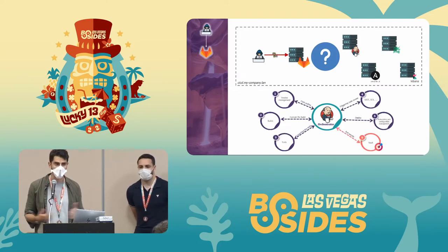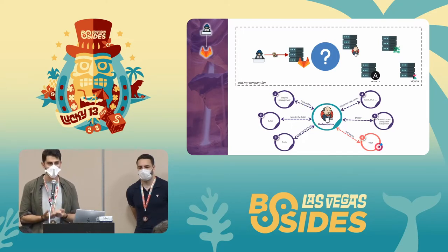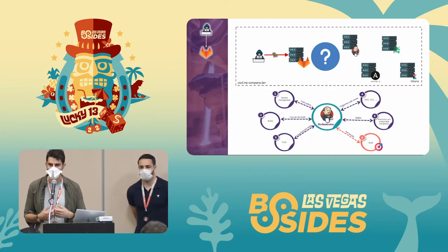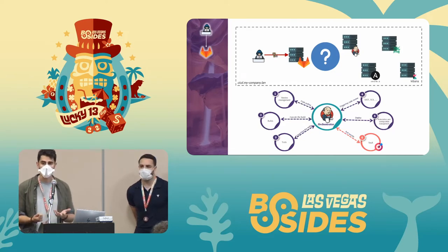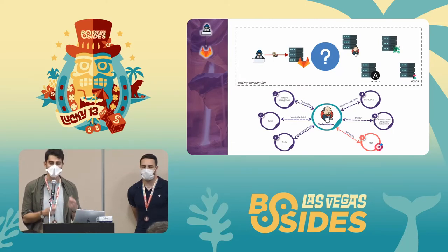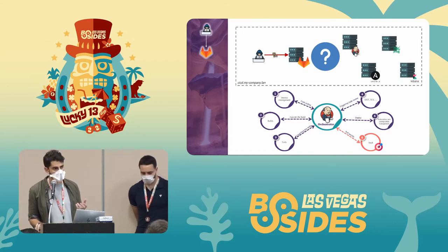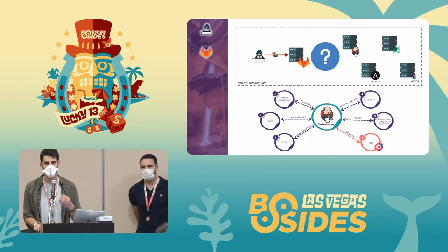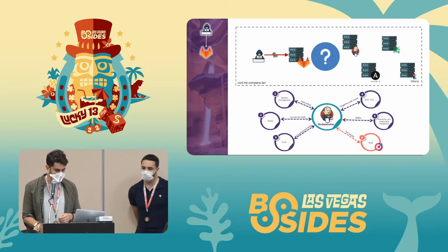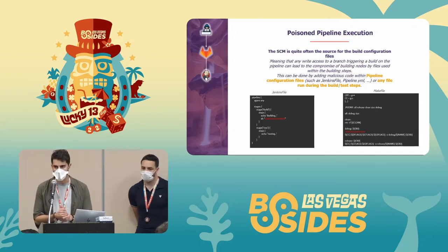Once we found secrets allowing us to access GitLab and push source code, the next obvious target is the orchestrator. The orchestrator is the main solution within the CI/CD pipeline — responsible for pulling source code, building the project, running tests, and deploying. To do this it needs access to a vault or secrets. If you successfully compromise the orchestrator, you obtain all secrets available within the CI/CD pipeline — making it an obvious and very valuable target.